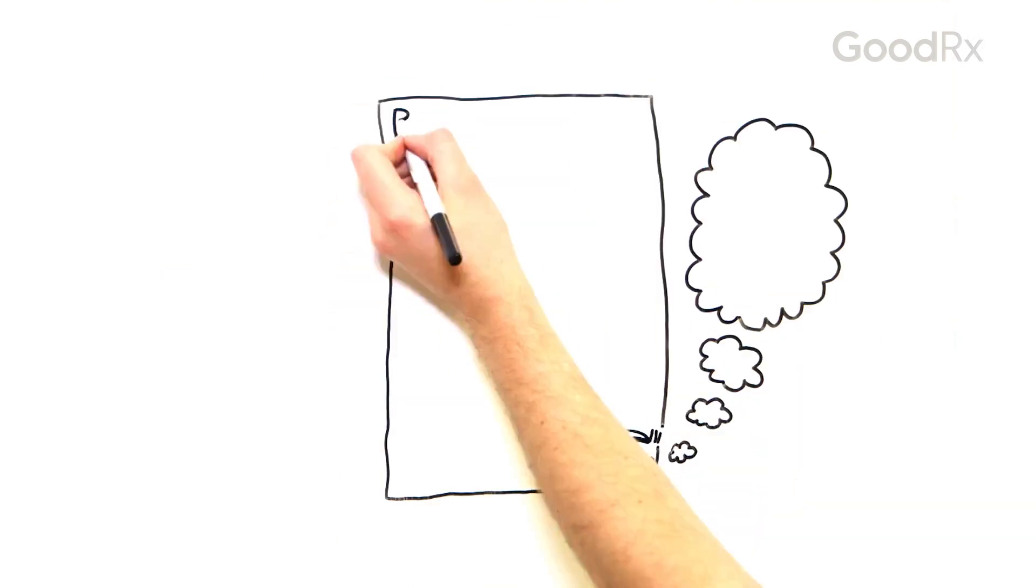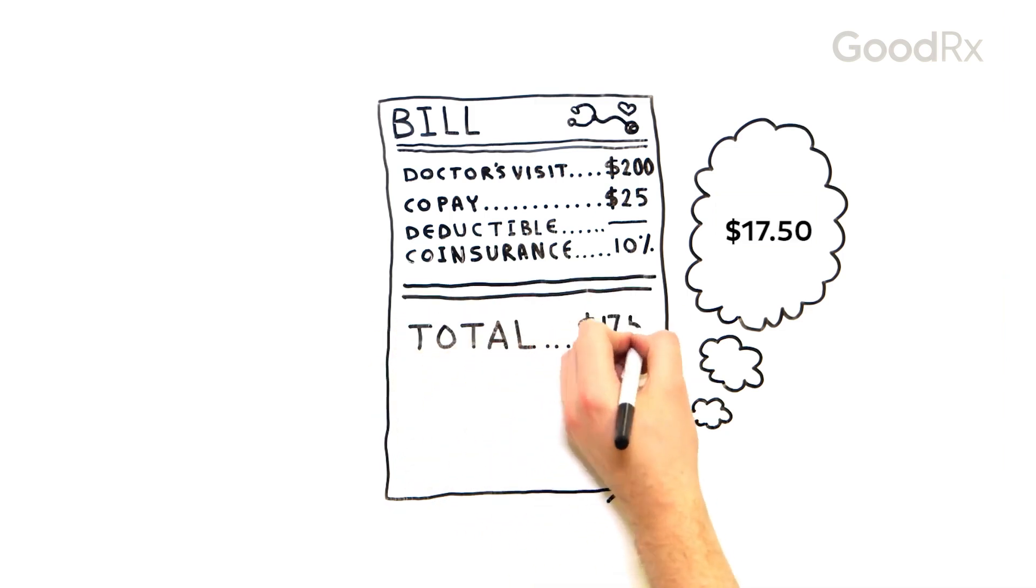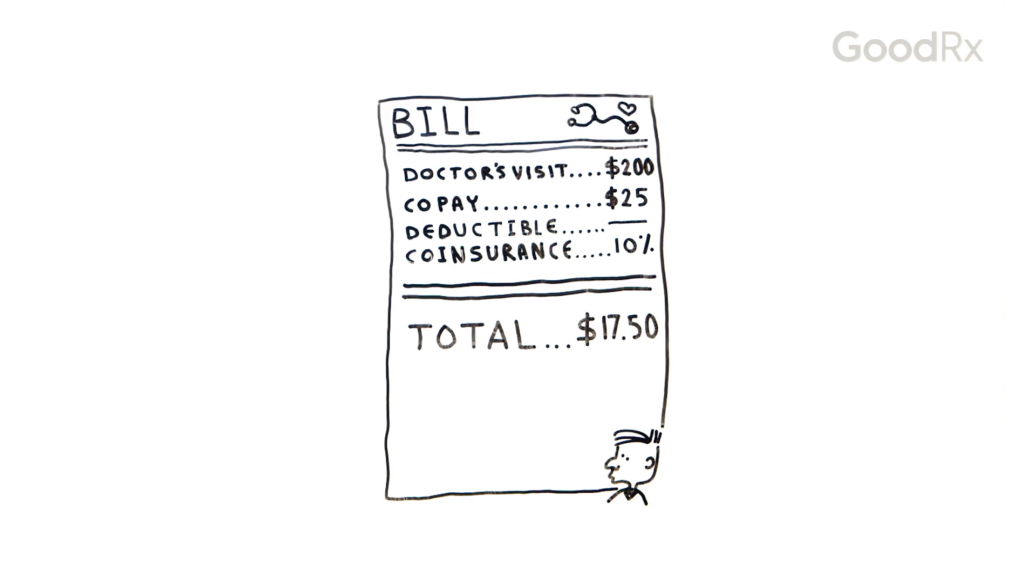Let's see why. Jim's doctor charges $200 for the office visit and tests. Jim paid the $25 co-pay in the office. He's already met the deductible, so the insurance company is paying the rest of the bill, minus 10% co-insurance. That 10% is $17.50 and is billed for Jim to pay.